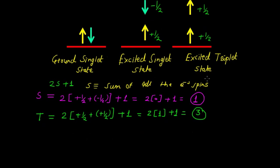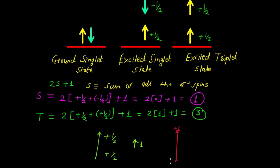We call it the excited triplet state because we have two spins of plus half each, and when we apply an external magnetic field, this spin can align in three different ways. When aligned upward, we call it plus 1. When aligned downward, we call it minus 1. When aligned at exactly a right angle to the applied magnetic field, we call it 0. Since there are three different spin states, it is known as the excited triplet state.